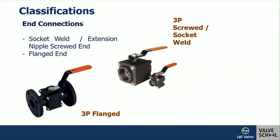We can also classify ball valves based on end connections. The popular one is flanged end connection, where flanges couple with pipeline flanges. Small-bore valves have socket weld and screwed end connections. Floating ball valve sizes start from 1/4 inch (DN8) up to DN200 (8 inch), with some manufacturers making 10 inch as well. Socket weld end connections are also available with extension nipples so that contractors need not disturb the internals during welding.